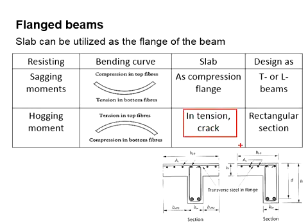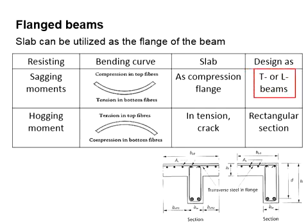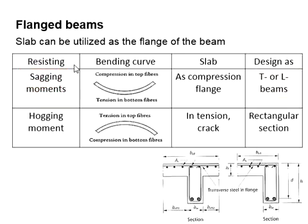Therefore, a rectangular section is considered under hogging moment. In principle, a beam can be considered as a flange beam — either T or L beam — when it is undergoing sagging moment. As for the hogging moment, a rectangular section is assumed.